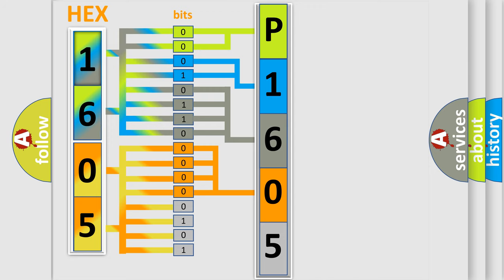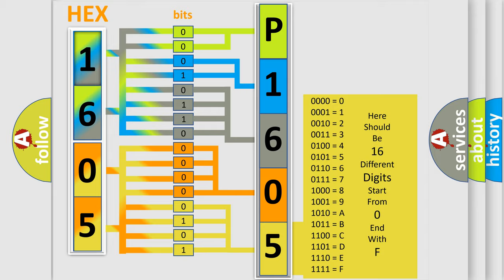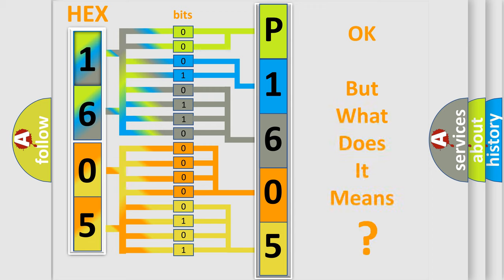A single byte conceals 256 possible combinations. We now know in what way the diagnostic tool translates the received information into a more comprehensible format. The number itself does not make sense to us if we cannot assign information about what it actually expresses.